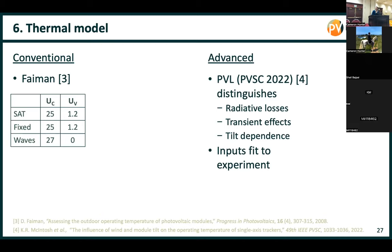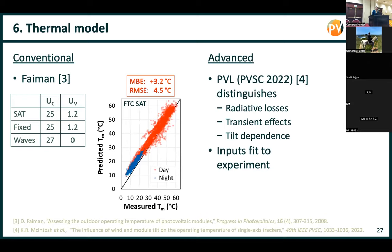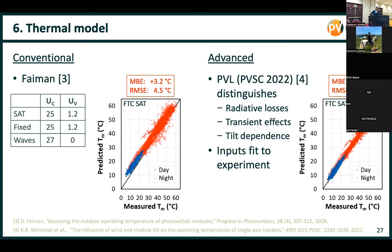For the thermal model, it's standard to use the Faiman model with conventional inputs. In the advanced case, we developed a thermal model published last year at the conference — there are many other thermal models too. This one accounts for radiative losses and how they change through the day, transient effects, tilt dependence, and it's fitted to experimental data. We could predict the temperature of the module much more accurately with the more advanced model.